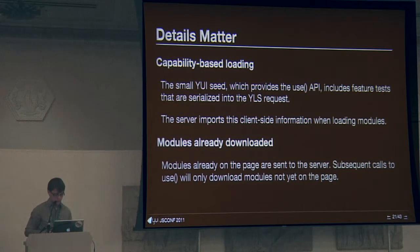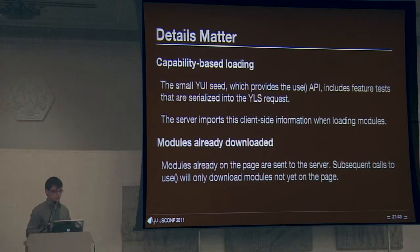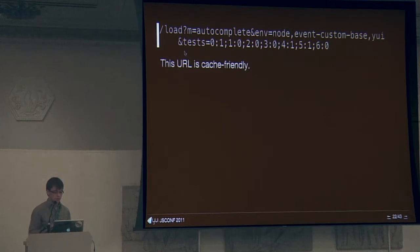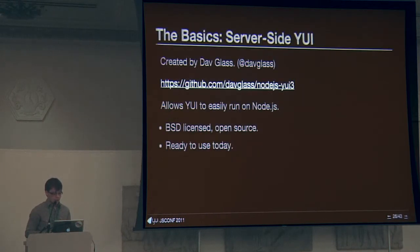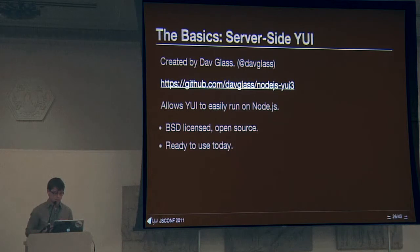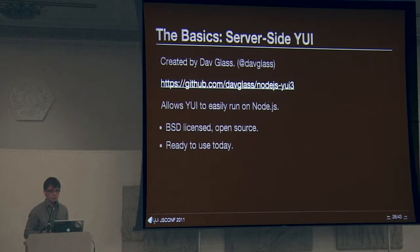Capability-based loading is really important. We wanted to transfer state to the server — all the feature tests already on the page are sent as well. This is cache-friendly; it's not a unique URL, so if someone comes with the same browser they get the same response. We're already using this at YUILibrary.com and working to bring it to everyone. Server-side YUI is what I'm using — it's already open source and allows YUI to easily run on Node. The loader part is already open source; what's not yet is the tooling around it.